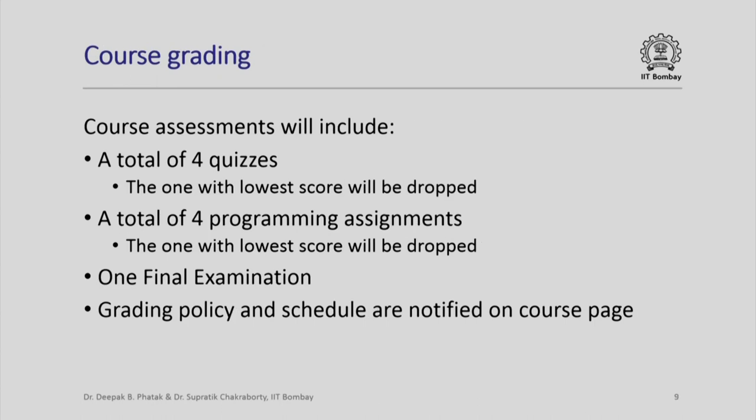The course grading will comprise several assessments. These will include a total of four quizzes, out of which marks for the three best scores will be considered — the one quiz with the lowest score will be dropped. The grading will also include four programming assignments, again with the lowest score dropped. There will be one final examination. The grading policy and schedule are notified on the course page.